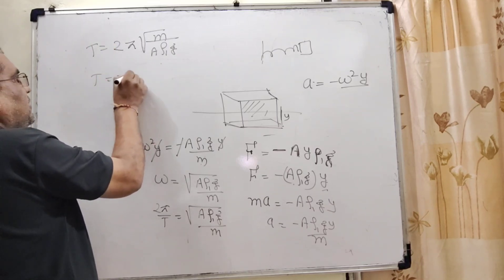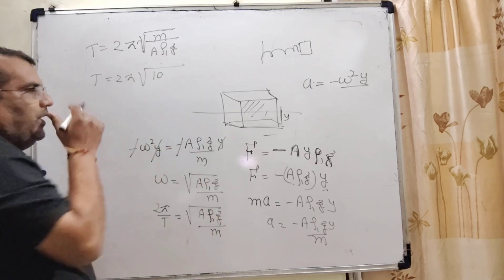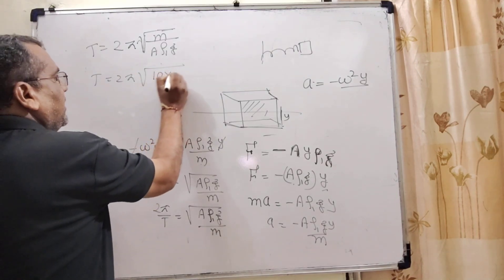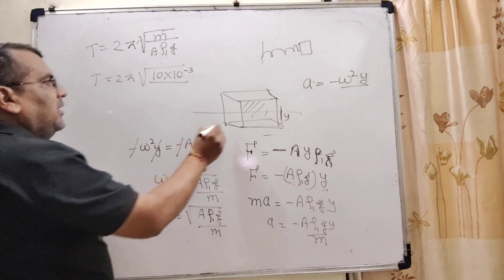Mass m is 10 grams, converted to kilograms that's 10⁻³. Area A